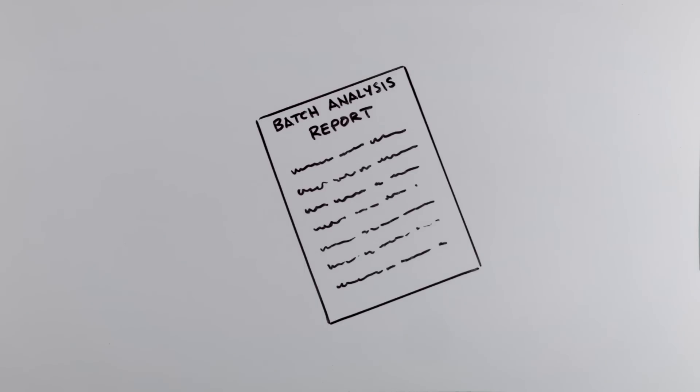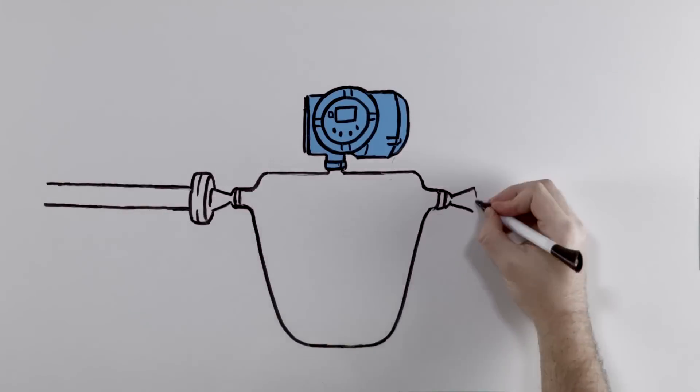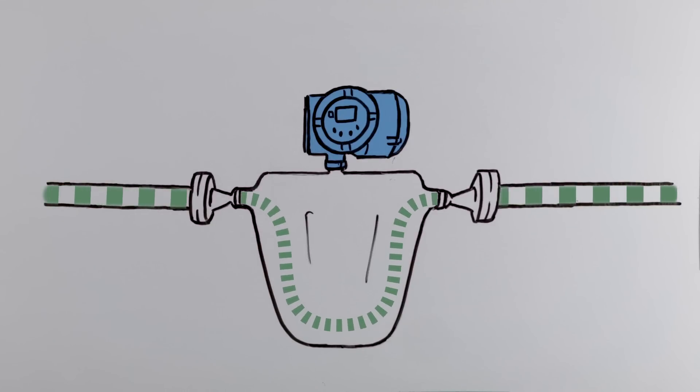Tina knows that the meters aren't typically to blame, but she can't always prove it. At low flow, meter zero is an important component of flow measurement accuracy.